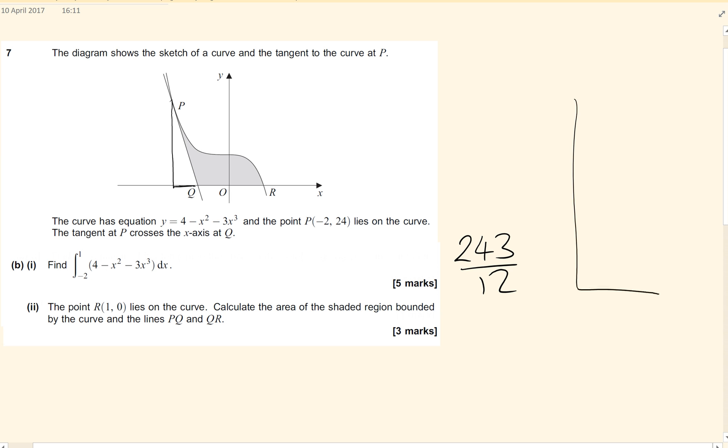So that triangle there goes up to the point P. The point P we know has got a y value of 24. So this length here is 24. We know that P is also minus 2 along here.